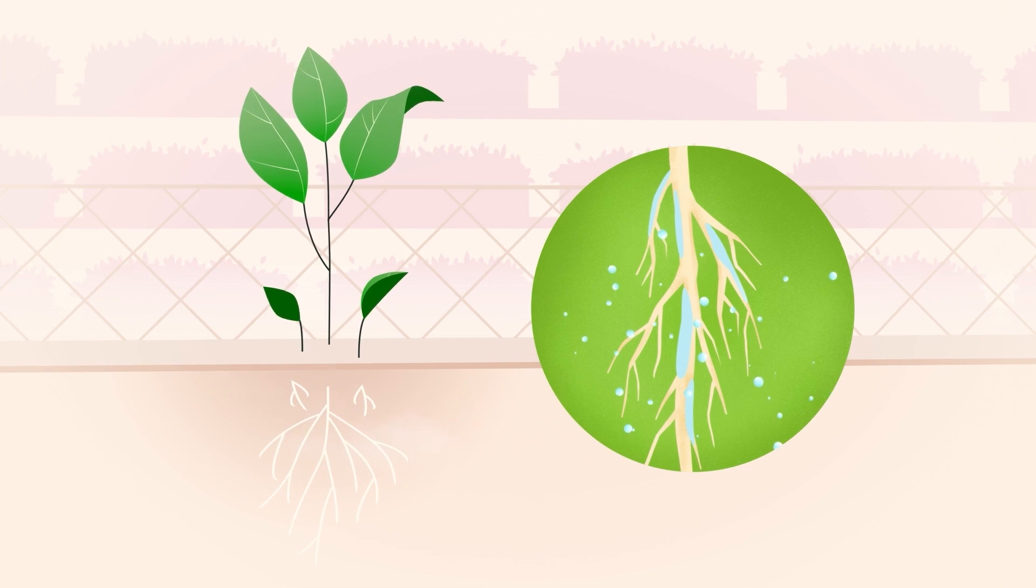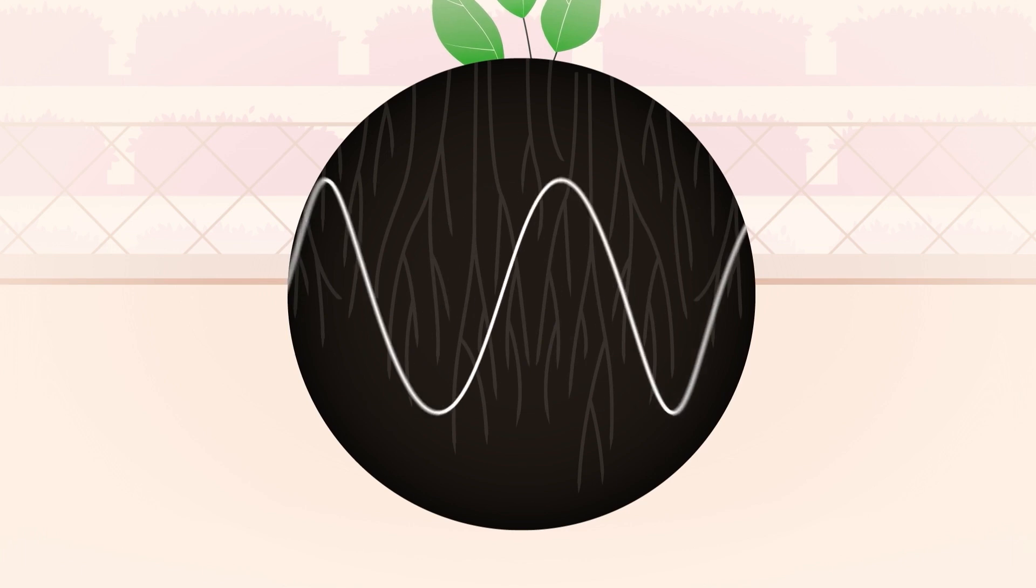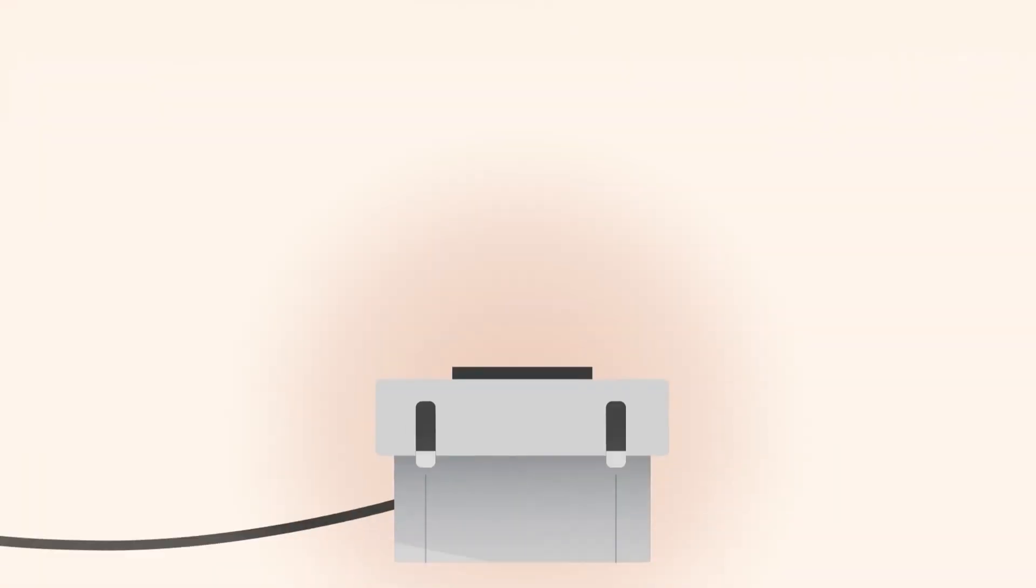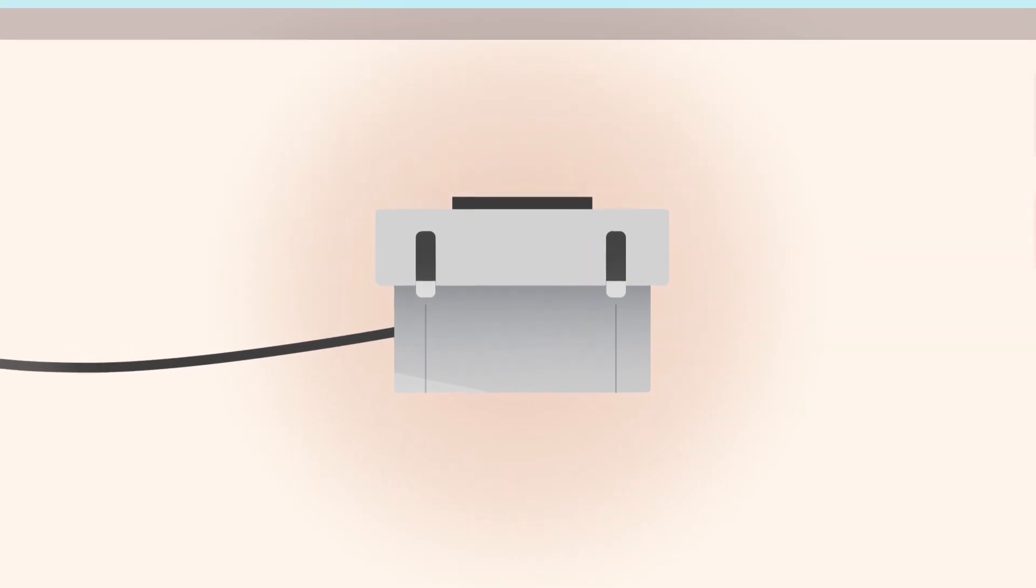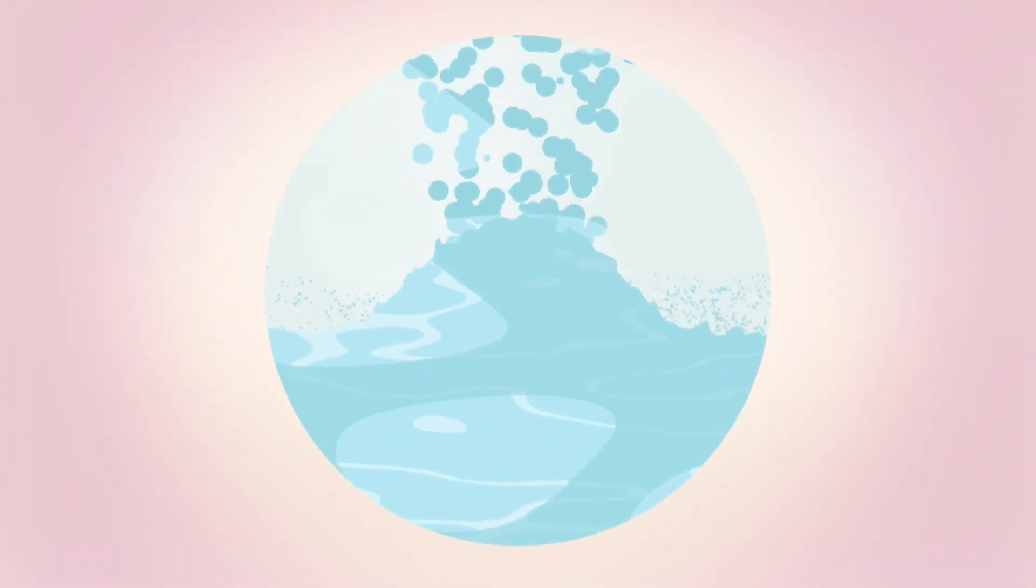At Lettuce Grow, we create this mist using ultrasonics, sound waves that vibrate at frequencies over 20 kHz, well above the range of human hearing. This is an atomizer. We use it to produce these high-frequency sound waves and create ripples in nutrient-rich water.